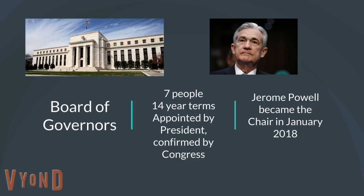One of those people is Jerome Powell. He is the chair for four years, and has been the chair since January 2018. When President Trump took office, Janet Yellen was the chair. Normally chairs are reappointed — when Obama took over he kept Bush's chair, when Bush came into office he kept Clinton's chair. This is only the second time since World War II that a chair has not been reappointed.